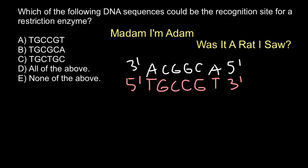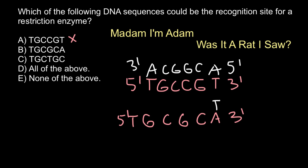Let's check answer B. The sequence is T-G-C-G-C-A — five-prime here and three-prime here. If we build the complementary strand, we are going to get T-G-C-G-C-A on the complementary strand as well, running five-prime to three-prime.